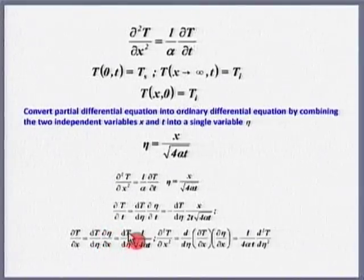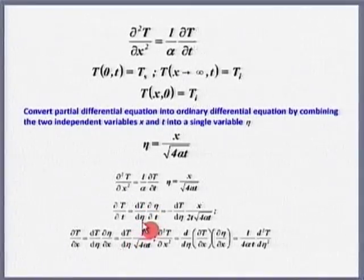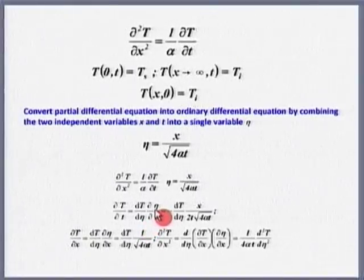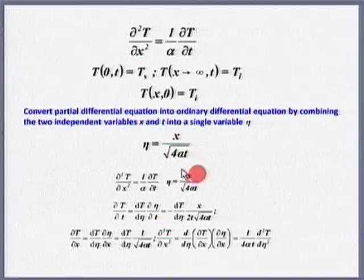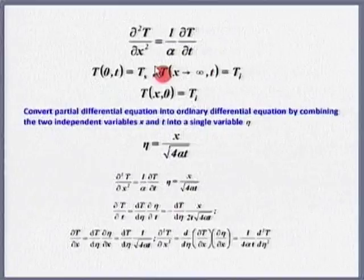Please note the careful subtle difference: whenever I write differentiation of T with respect to η I use the ordinary derivative, and whenever I differentiate η with respect to either t or x I use the partial derivative. This is because we will realize that when I use η, my temperature becomes a function of η only — it becomes independent of x and t separately. That is how I can transform PDE into ODE.